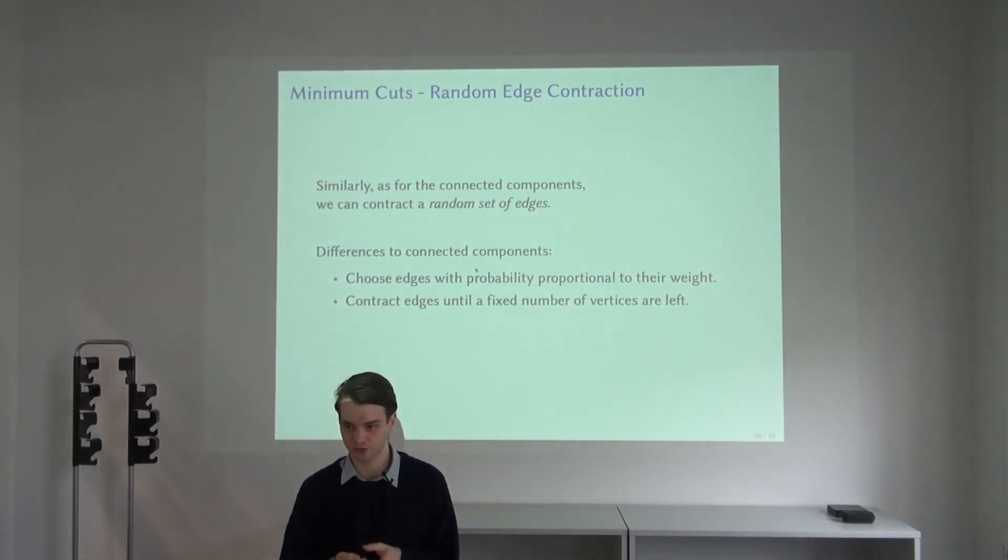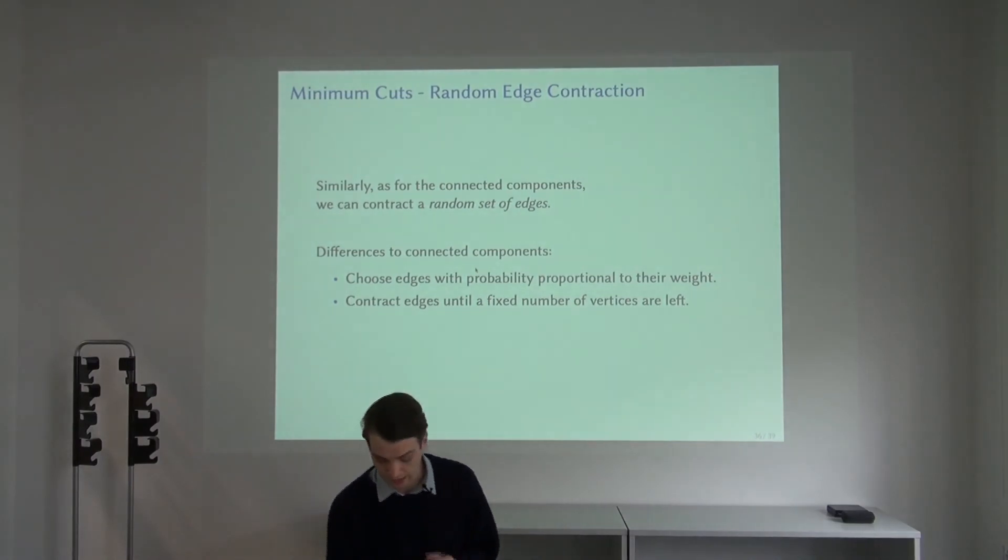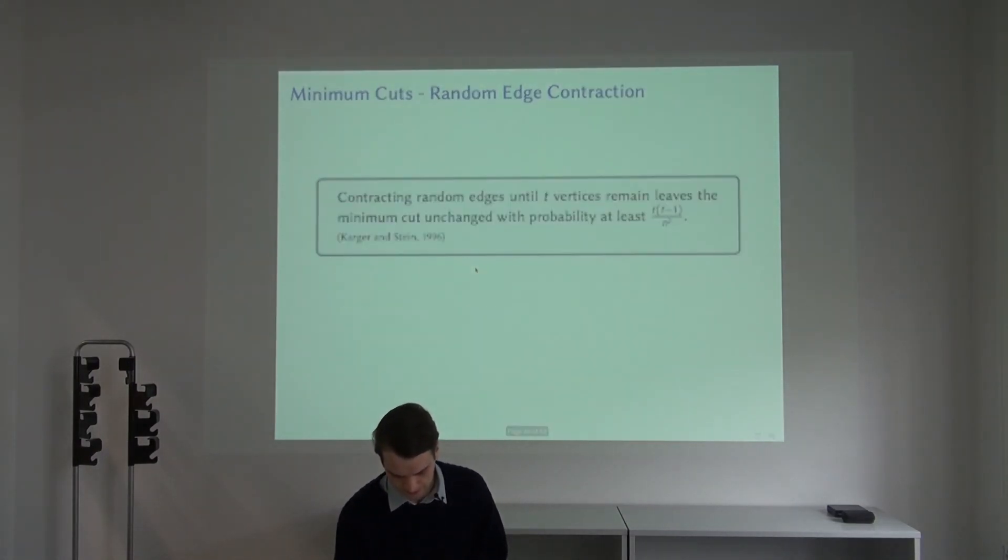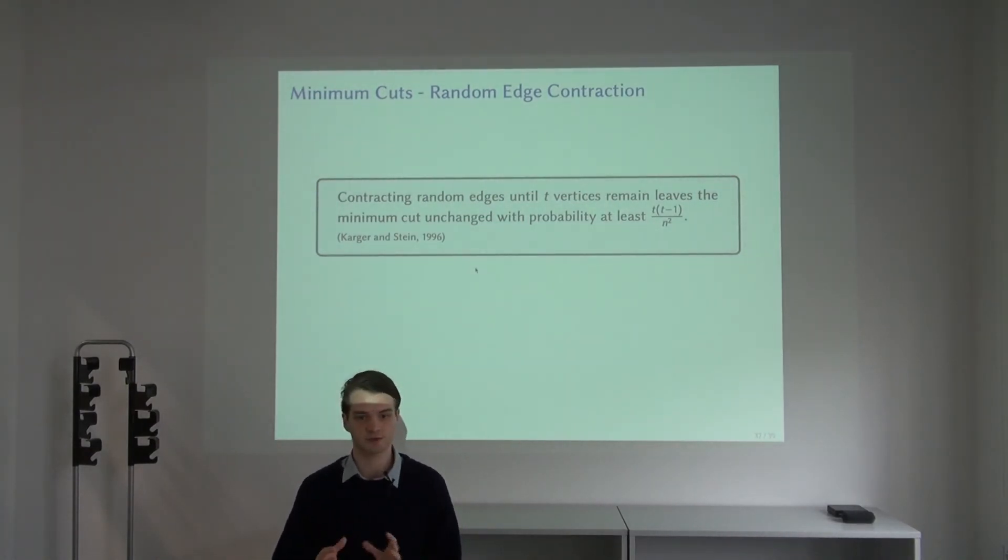Notice that we can't just contract all of the edges, then we are left just with one vertex, and that doesn't provide us with any useful information. So we need to keep some edges, some vertices. Here there comes in one of the key trade-offs for these kinds of algorithms. How much do we shrink the graph randomly and how do we proceed from there?